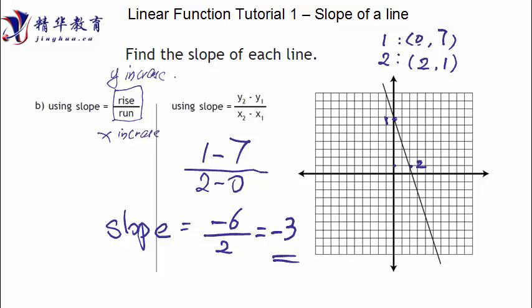Does it make sense that the slope is a negative value? Yes. Why? Because when x is increasing, y is actually decreasing. When x is increasing and y is decreasing, we call that a negative slope function.